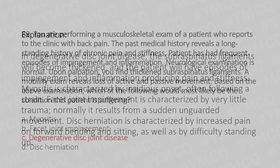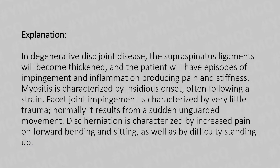In degenerative disc joint disease, the supraspinous ligament will become thickened and the patient will have episodes of impingement and inflammation producing pain and stiffness. Myositis is characterized by insidious onset, often following a strain. Facet joint impingement is characterized by very little trauma — normally it results from sudden unguarded movements. Disc herniation is characterized by increased pain on forward bending and sitting, as well as difficulty in standing up.